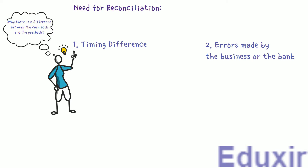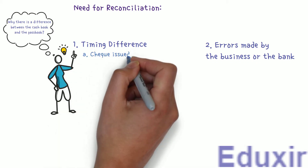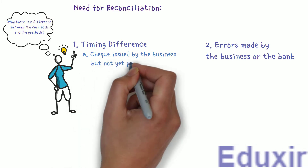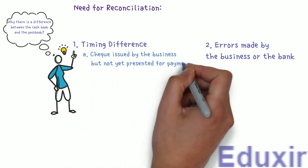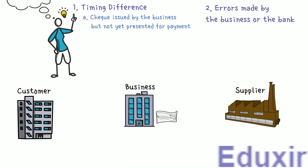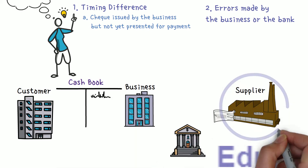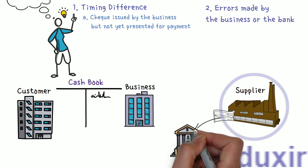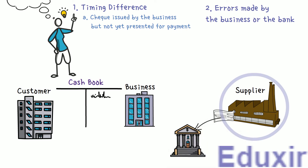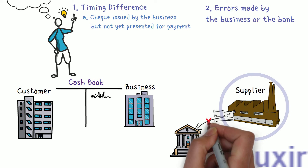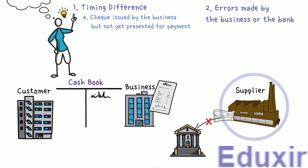One reason for timing difference is checks issued by the business but not yet presented for payment. When the business issues a check to the supplier or creditor, they are immediately entered on the credit side of the cashbook. The supplier or creditor has to encash this check by presenting it to the bank. In some cases, the creditor or supplier may not present this check immediately, so it will not appear in the bank statement.